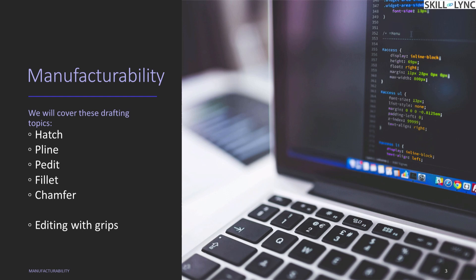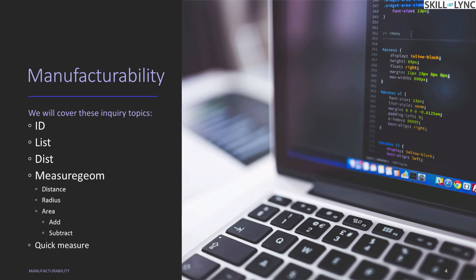Next we'll look into commands to edit polyline objects, then key critical manufacturing techniques — filleting and chamfer — covering what each is and why it's required. We'll also look at how to edit objects using the grip edit command. Then we'll look into several inquiry techniques AutoCAD offers: what an ID means, features in the list command, the distance command for measuring length between two points, the integrated measure command for distance, radius, area (including add/subtract of areas), and finally the quick measure command.